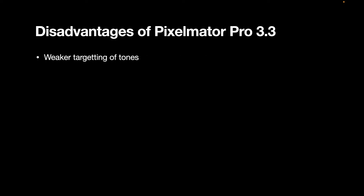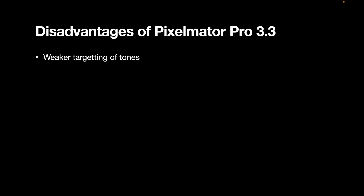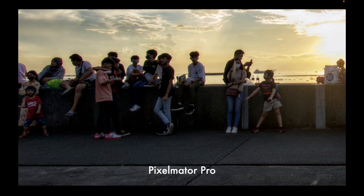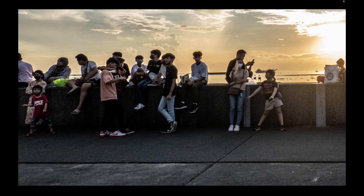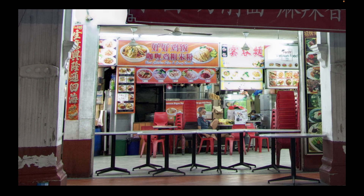Now let's talk about some disadvantages of Pixelmator 3.3 when compared to Lightroom. Pixelmator's adjustments don't target shadows and highlights as well as Lightroom because they affect too many tones, in my opinion. Also, for whatever reason, Adobe Lightroom's adjustments produce clearer details than Pixelmator. This might not be obvious on a small screen, but on my 32-inch monitor, I could see clearer details with Lightroom.